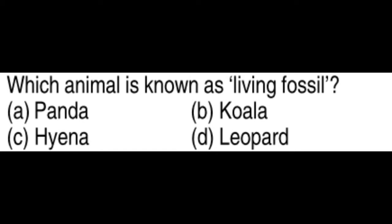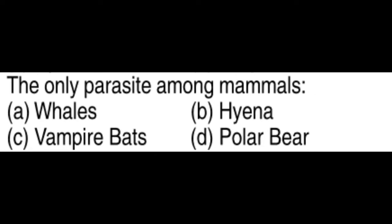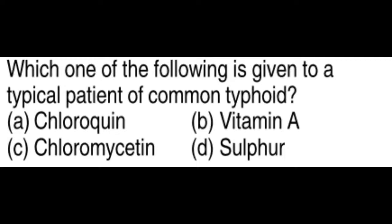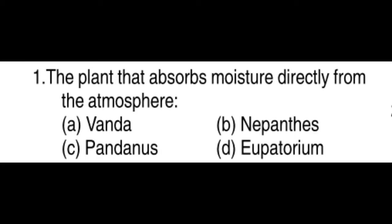Which animal is known as a living fossil? The panda. The only parasite among mammals is the vampire bat. The normal cholesterol level in human blood is 180–200 mg. Which one is given to a typical patient of typhoid? Chloromycin. The plant that absorbs moisture directly from the atmosphere is Banda.